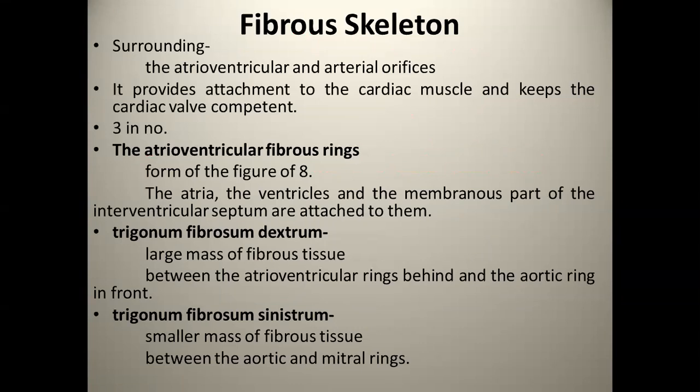तो Fibrous Skeleton क्या होता है — ये surrounding होता है Atrioventricular और Arterial orifices में. जो Atrium और Ventricle के बीच में है, दो — Right और Left — और Arterial wall. इन तीनों जगहों में ये surround होता है. It provides attachment to the cardiac muscle and keeps the cardiac wall competent.